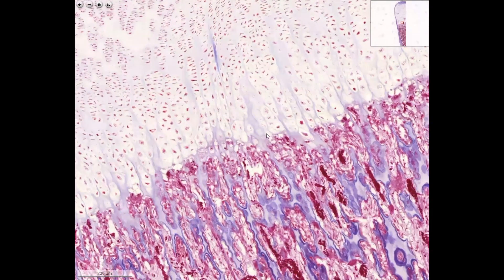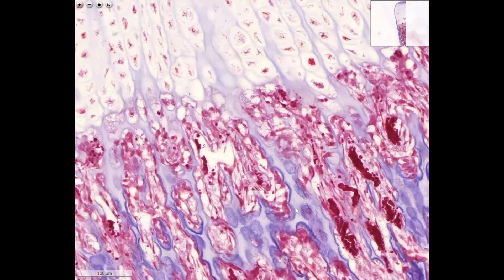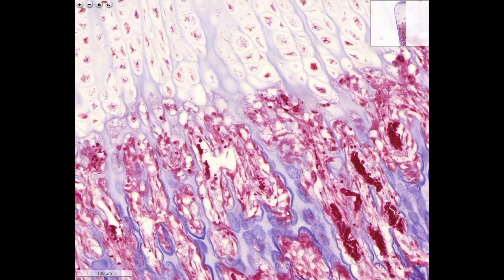Then the mesenchymal tissue invades, bringing the osteoprogenitor cells that multiply and differentiate into osteoblasts. The osteoblasts will sit onto the surface of these directing trabeculae — remnants of the cartilage. Here you see the intercellular substance of the cartilage continuing downward. Here are the osteoblasts. They produce osteoid, which gives this dark blue contour to these directing trabeculae originating from the intercellular matrix of the hyaline cartilage.